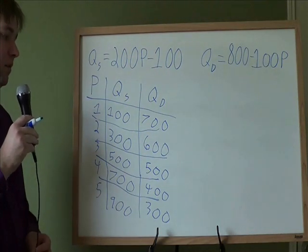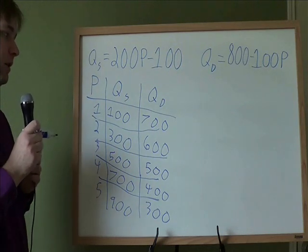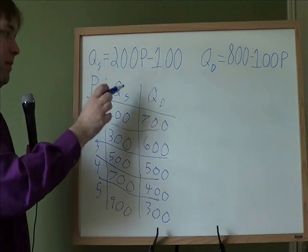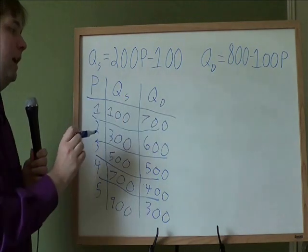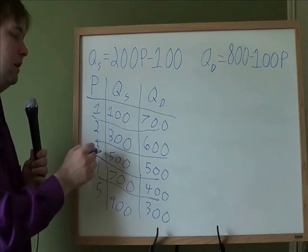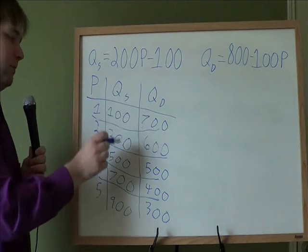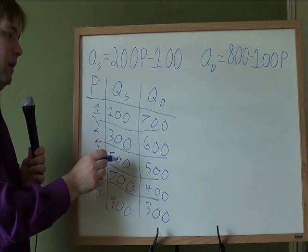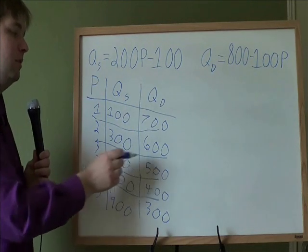So then part B, what's the equilibrium price and quantity? Well, we've got this table here. So we want to know where does the amount of apples that the farmers want to sell match the amount of apples people want to buy? It's not at $1. It's not at $2. It's here at $3. If the price is $3, the farmers want to sell 500 apples to people, and the people want to buy 500 apples from the farmers. That's what makes everybody happy. That's the equilibrium.